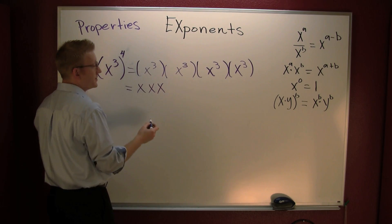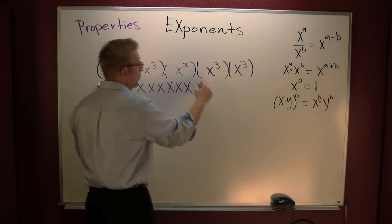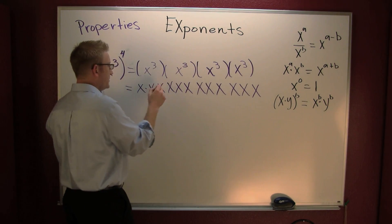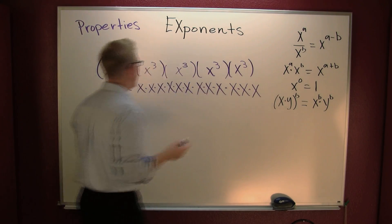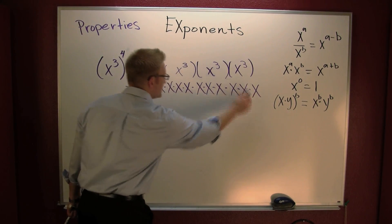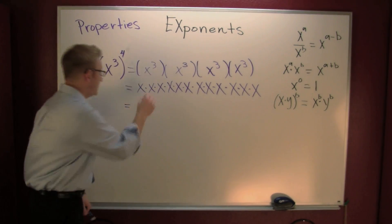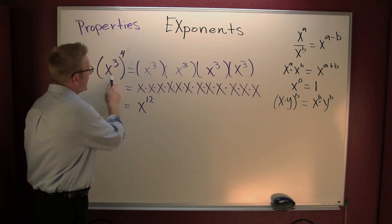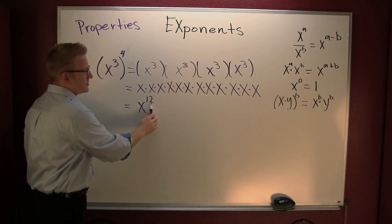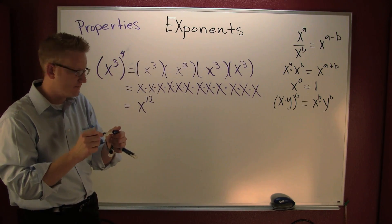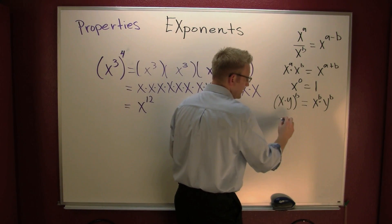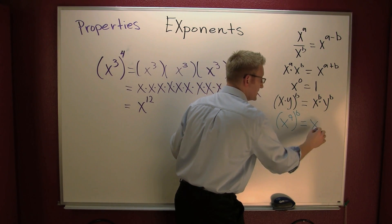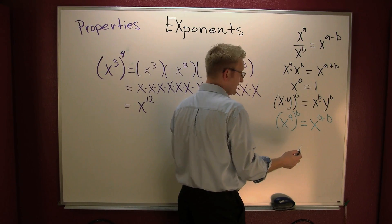Continuing the expansion, we end up with 12 x's total — count them: 12. Rewriting in exponent notation, this is x to the 12. So the general rule: if you have a power raised to a power, you multiply the exponents. x to the a, to the b, equals x to the a times b.